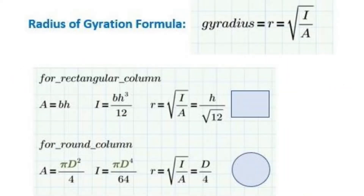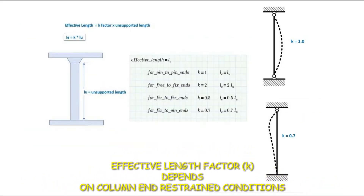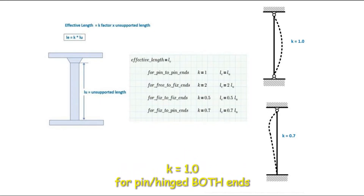These are the derived radius of gyration formulas for a rectangular column or for a spiral column. The effective length of a column is defined as its unsupported length times a k factor. The value of k, or the effective length factor, varies depending on what type of end connections the slender column has. For example, if the slender column has pin-to-pin ends or a hinge at both ends, then the k factor value equals 1.